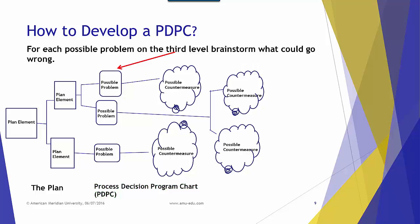For each possible problem on the third level, brainstorm what could happen. What could actually go wrong?